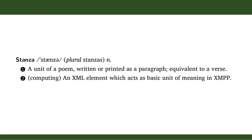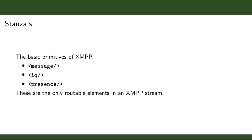Inside the stream we start sending asynchronous XML payloads, mostly stanzas. Stanzas are the basic primitive unit of meaning inside an XMPP stream. There are three of them: message, IQ, and presence. These are the only routable elements in XMPP — if you want anything to travel over a server-to-server connection or to any other user, you have to wrap it in one of these three primitives.